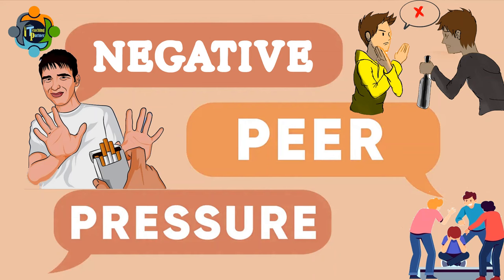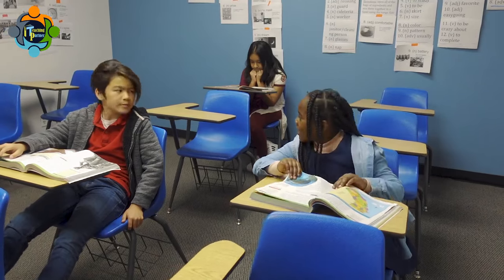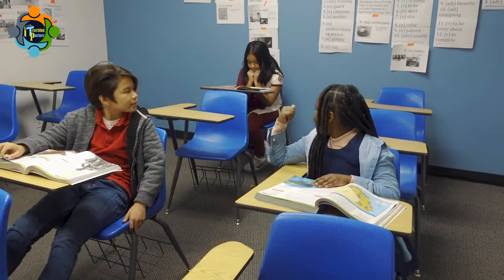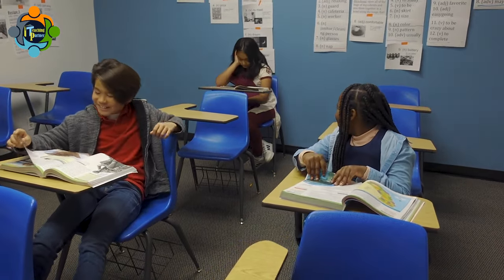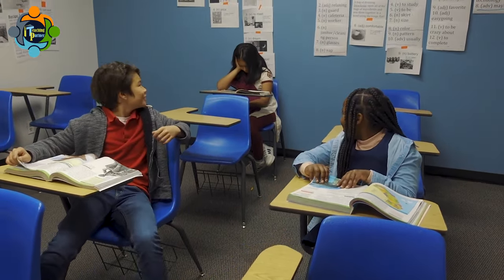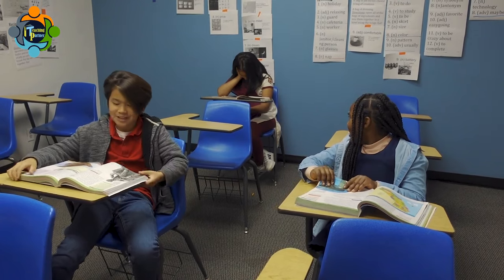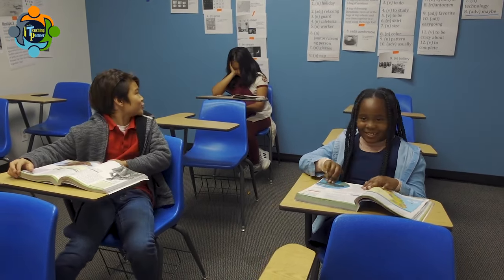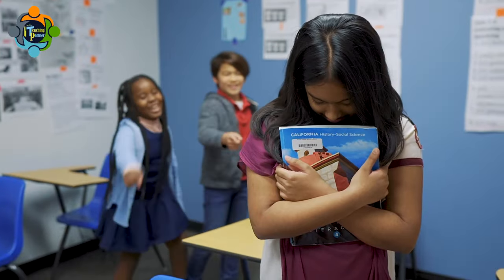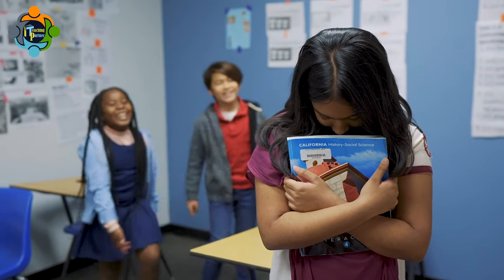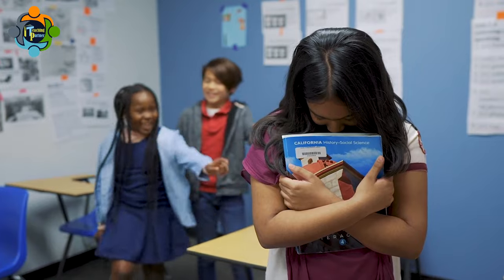Now let's talk about negative peer pressure. Negative peer pressure can have far-reaching consequences and can impact a student's life in many ways. One example is bullying. When a group of peers takes it upon themselves to bully another student, the victim can suffer severe emotional and mental distress, leading to issues such as low self-esteem, anxiety, and depression.